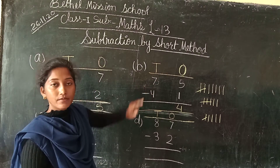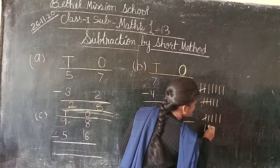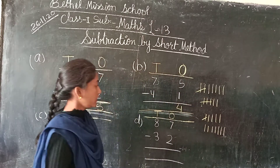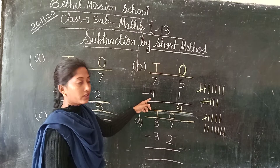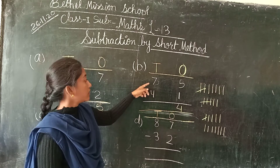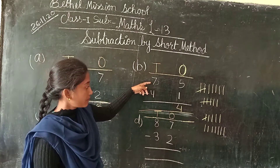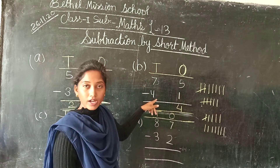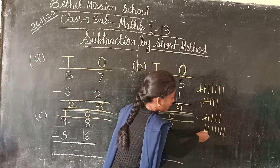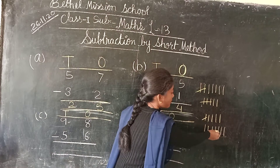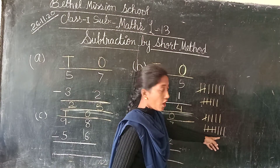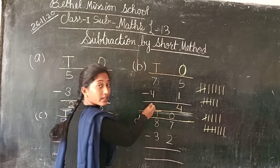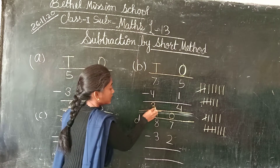Means 7 tens minus 4 tens. So first we will draw 7 lines: 1, 2, 3, 4, 5, 6, 7. Now we will cut 4 lines: 1, 2, 3, 4. Then how many are left? 1, 2, 3. How many are left? 3.